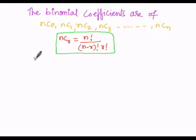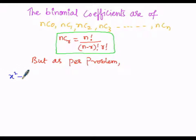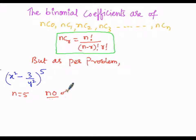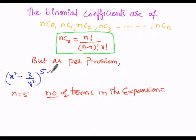As per the problem, (x² − 3/y²)^5: here n = 5. The number of terms in the expansion equals one more than the exponent of the binomial. The exponent is 5, so we add 1, giving 6 terms in the expansion of (x² − 3/y²)^5.